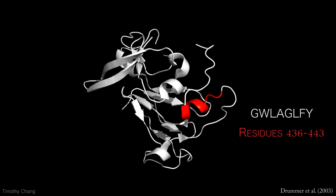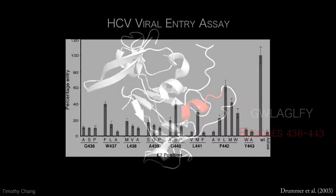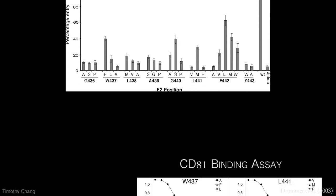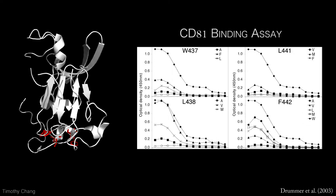Site-directed mutagenesis was used to test the function of this motif. Mutations of any residue led to significant drops in HCV viral entry into cells, as seen in the graphical comparison to the wild type. In testing with CD81-LEL binding,